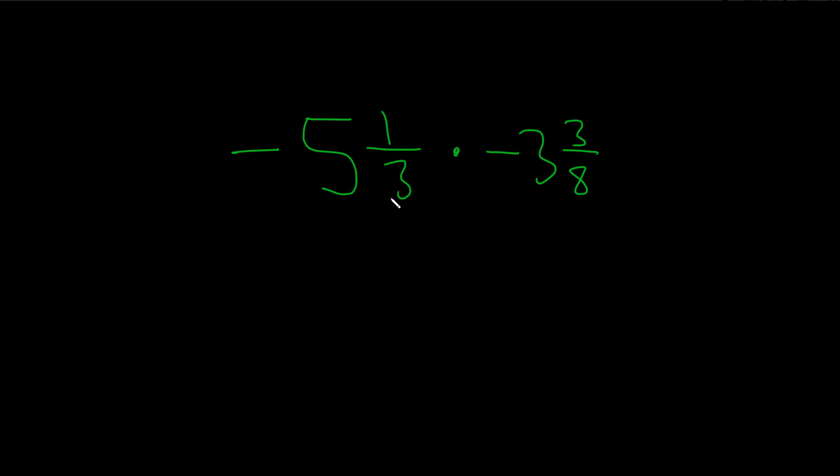So to do that, we'll do this. 3 times 5 is 15. I'll put it up here. And then you add this number here, plus 1, so you get 16. Again, 3 times 5 is 15, 15 plus 1 is 16. So you multiply and add, multiply and add. So 16 over, and then you just put this number here, 3. And the negative is still there.